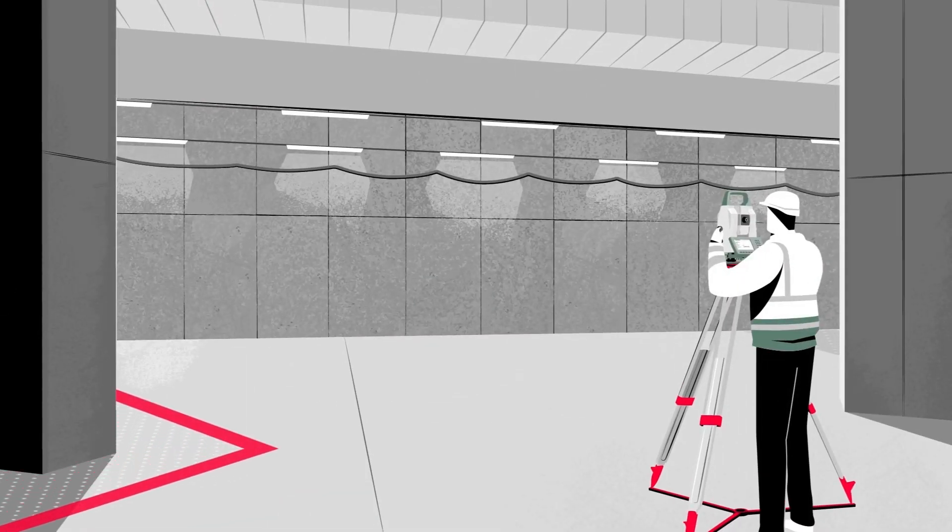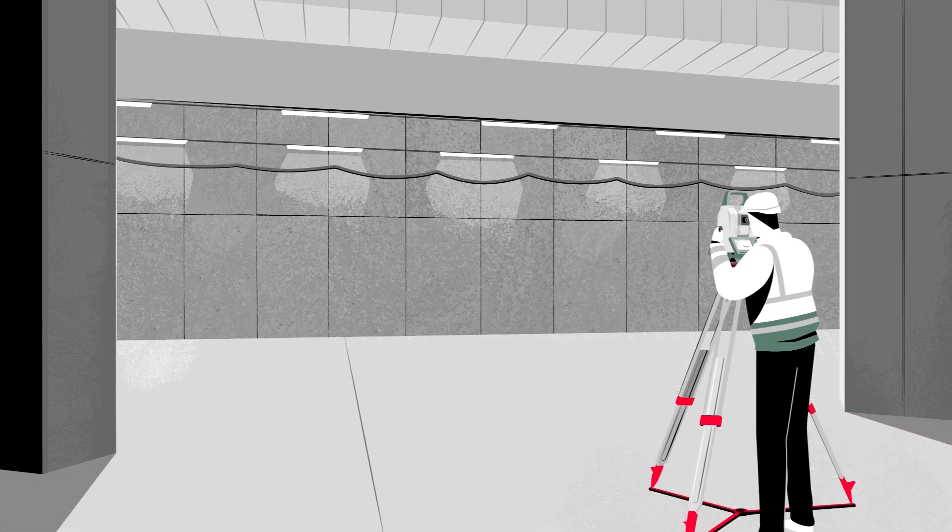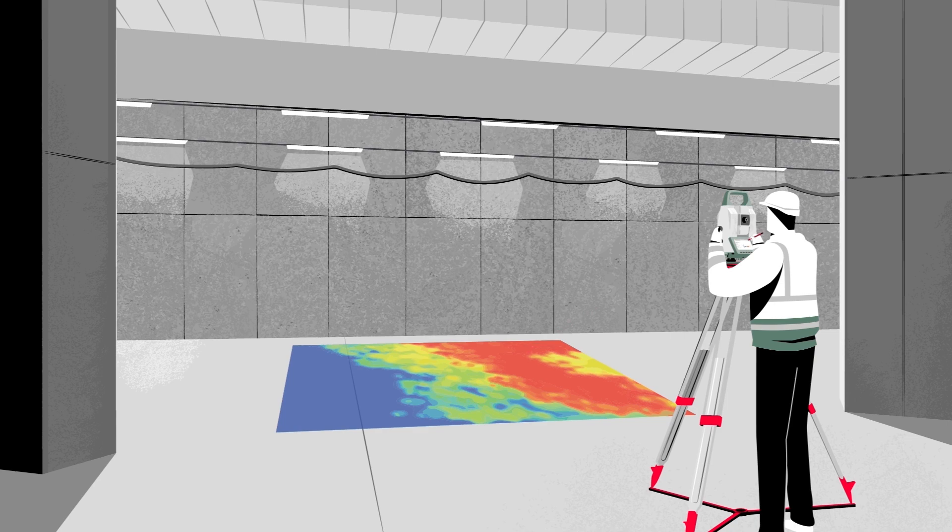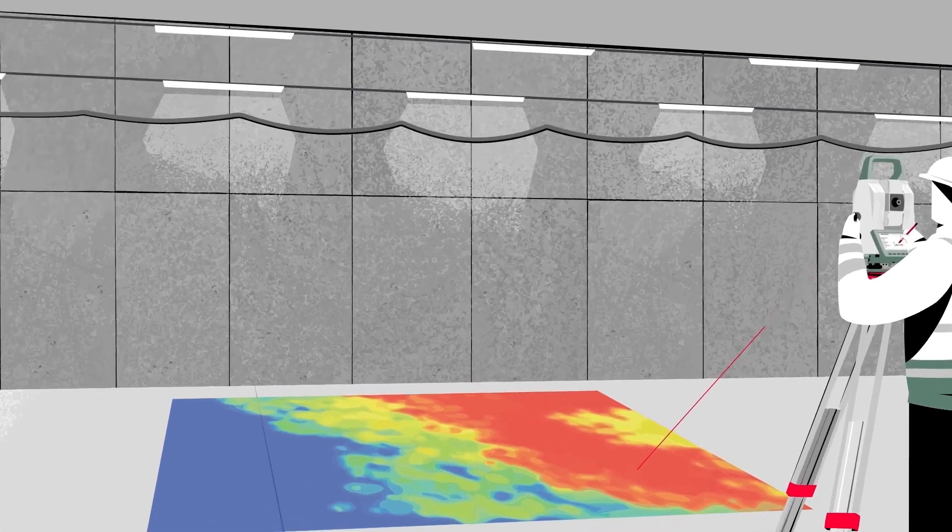For example, checking the flatness of a concrete floor has never been this easy. Just create a 3D visualization of measurements compared to a reference surface and immediately point to the problem areas using the red laser of the Leica Nova MS60 multi-station.